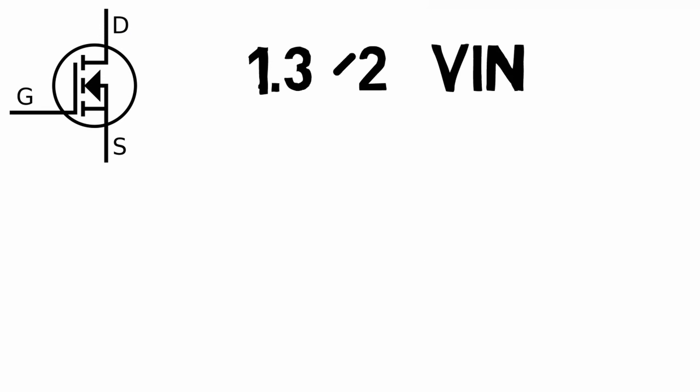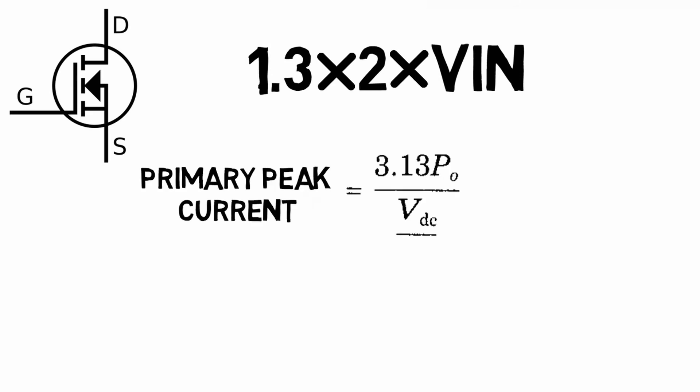1.3 is a safety factor we are considering over here. For the current requirements we should consider primary peak current which can be calculated from this equation, where Po is output power, Vdc is input voltage, and operating frequency should be 50 kilohertz.